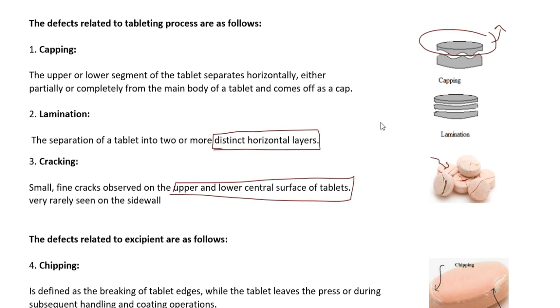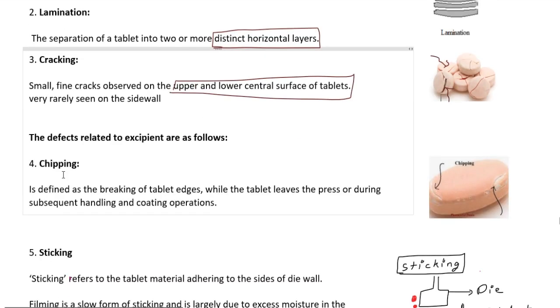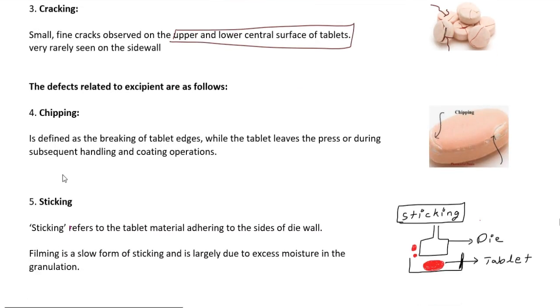Next is excipient related defects. Chipping is defined as the breaking of tablet edges while the tablet leaves the press or during subsequent handling operations.